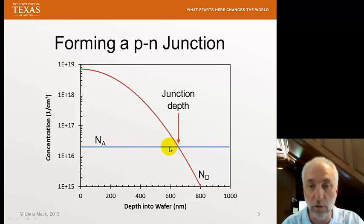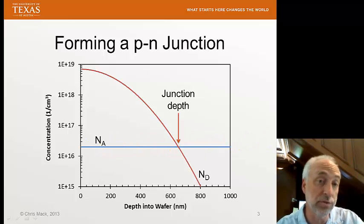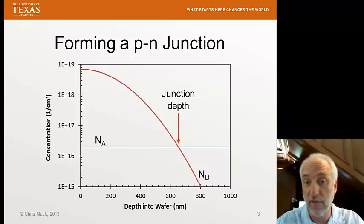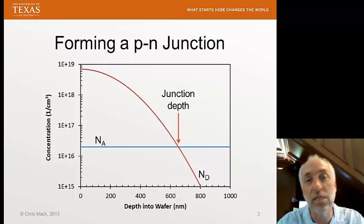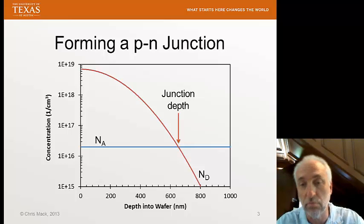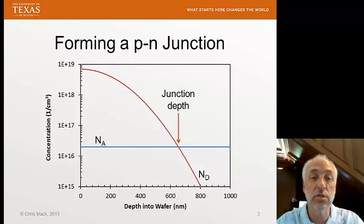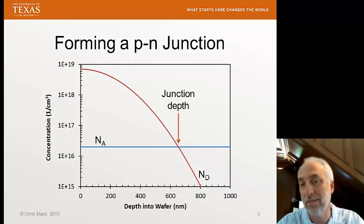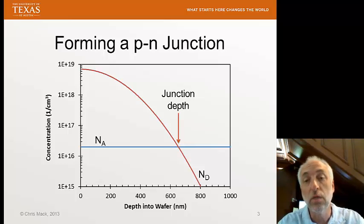The background uniformly doped wafer has acceptors at a certain uniform concentration. So now we have both acceptors and donors in this wafer after we've diffused our N-type dopant. We define the junction between the P-type region and the N-type region as the point where these two concentrations are equal — where Nd equals Na. That occurs at about 630 nanometers into the wafer. Given dopant concentrations, we can calculate mobile charge carrier concentrations using the charge balance equation coupled with the mass action equation, Np equals ni squared.